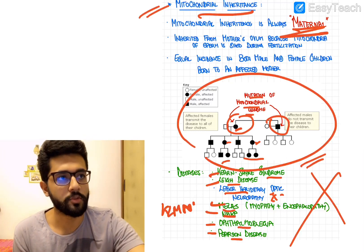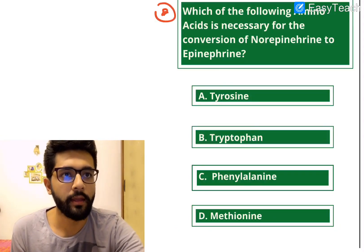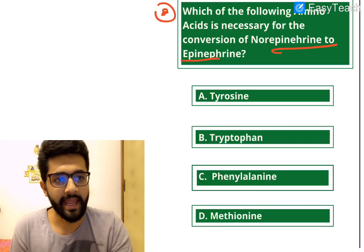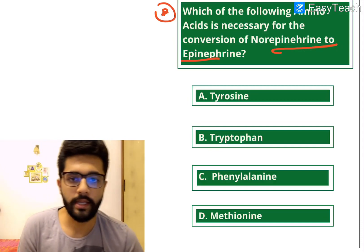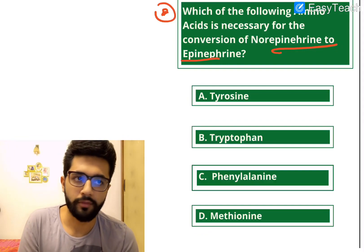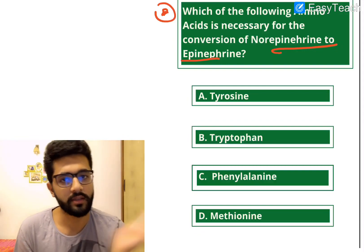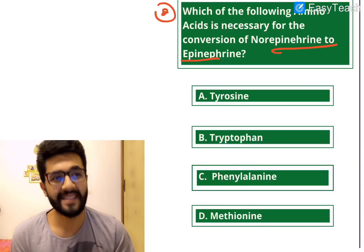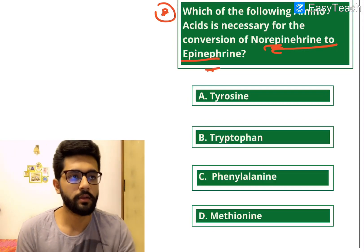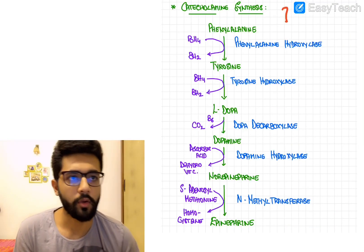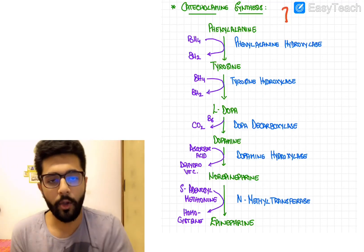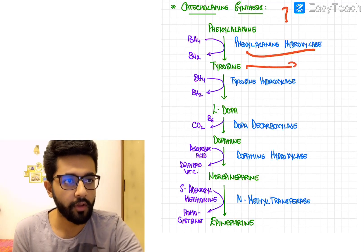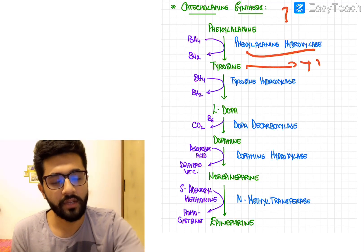Question two: which amino acid is necessary for the conversion of norepinephrine to epinephrine? Options: A) tyrosine, B) tryptophan, C) phenylalanine, or D) methionine. Let's look at the catecholamine synthesis pathway. It starts with phenylalanine, an aromatic amino acid like tyrosine and tryptophan. Phenylalanine hydroxylase converts phenylalanine to tyrosine, which can go toward thyroid or catecholamine synthesis.